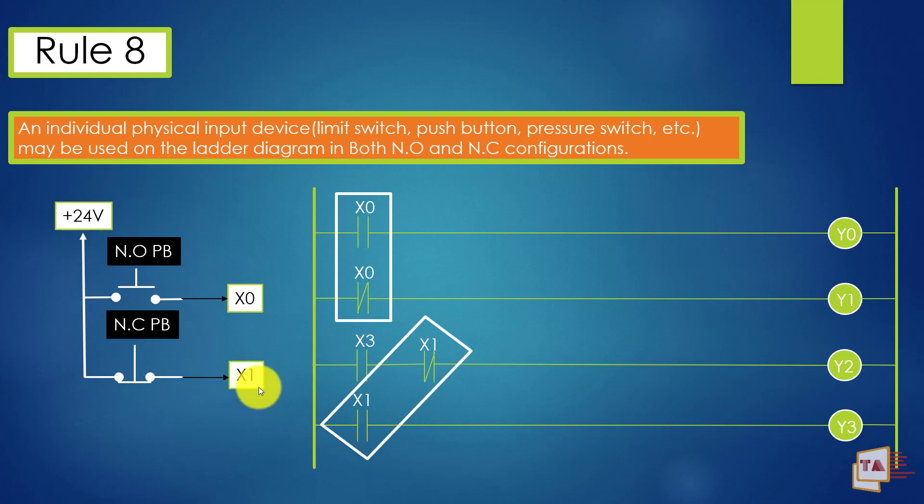You need to understand this logic and also same concept for the NC push button. See here we are using X1, but this configuration is normally closed. If you use X1 in ladder, if you put NO, always supply will come from this X1. So Y3 will always turn on. Suppose if you press the normally closed push button, it will open the circuit. So there's no more power supply in X1. Here I'm giving zero, so it will give one. So now the Y2 will turn on when the X3 and the X1 also gets turned on. So this is rule number eight.